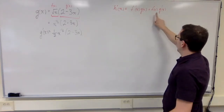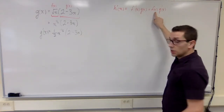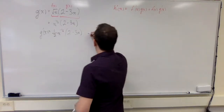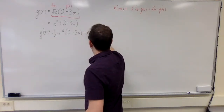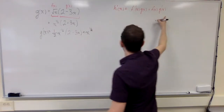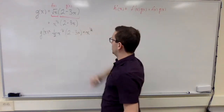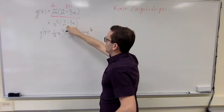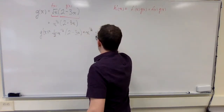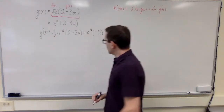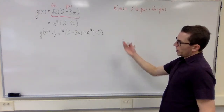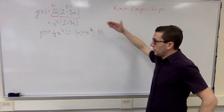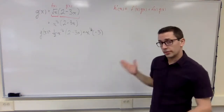The rule says I have to add the first function times the derivative of the second. So I add x to the power of a half, multiplied by the derivative of the second function. The derivative of 2 minus 3x is just negative 3. At this point, this is the derivative of my original function, and this is a totally acceptable form to leave it in.